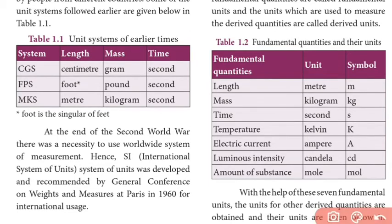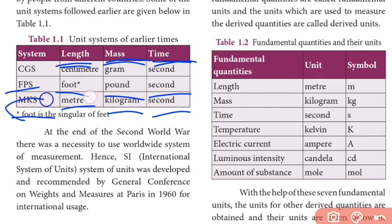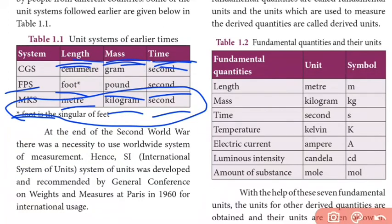There are different systems of units. The CGS system uses centimeter for length, gram for mass, and second for time. The FPS system uses foot and pound. The MKS system uses meter for length, kilogram for mass, and second for time, representing length, mass, and time.